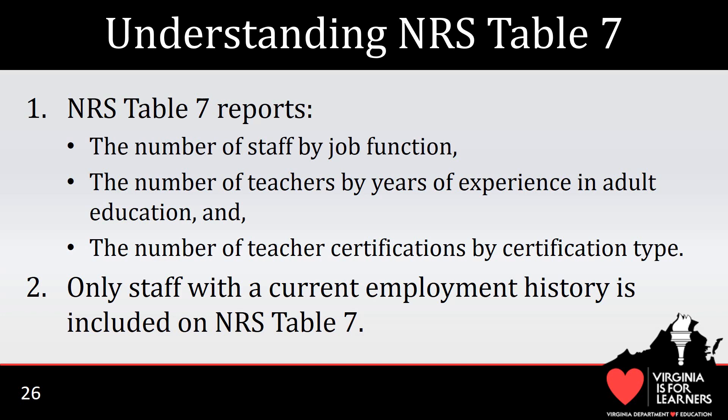Two, the number of teachers by years of experience. Because states have not received specific rules for what constitutes a year of experience, interpretation is left to each program to determine criteria for this field. Three, the number of teacher certifications by certification type. Here also, states have received little guidance for collecting this information. Because NRS Table 7 is a non-performance-based report, states do not receive any recognition for having a high number of adult educator certifications. For staff to be included in NRS Table 7, programs must make sure that the staff person has a current employment history in SSWS.